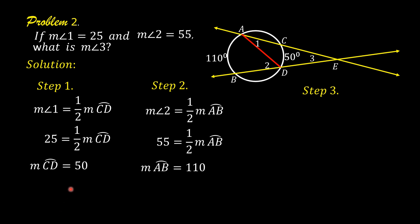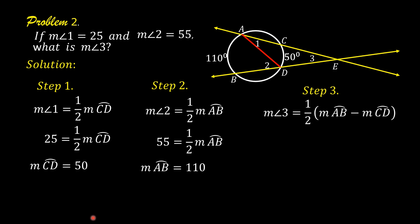Step number 3: according to the theorem, if two secants intersect outside the circle, then the measure of the angle formed is equal to one-half the positive difference between the measures of the intercepted arcs. In the figure, the two secants are secant AE and secant BE, and they intersect at point E. Angle 3 is the angle formed, and the intercepted arcs are arc AB and arc CD. So the measure of angle 3 is equal to one-half times the quantity measure of arc AB minus measure of arc CD.